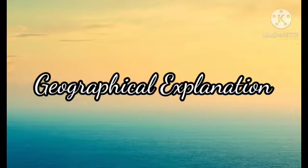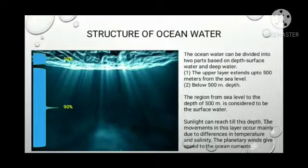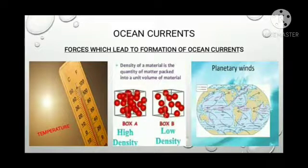Now let us see the geographical explanation about this. The ocean water can be divided into two parts based on depth: surface water and deep water. The upper layer extends up to 500 meters from the sea level. The region from sea level to the depth of 500 meters is considered to be the surface water, and sunlight can reach till this depth. The movements in this layer occur mainly due to differences in temperature as well as salinity. The planetary winds give speed to the ocean currents.